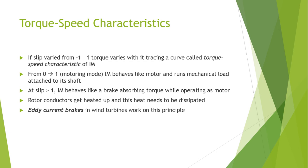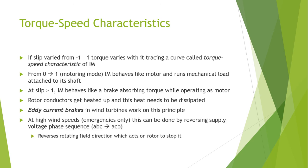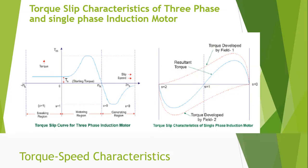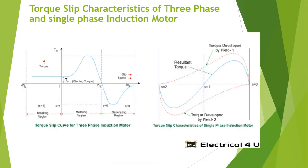Smaller machines are air-cooled and larger machines employ water cooling systems. There are also eddy current brakes; wind turbines work on these principles. At high wind speed, braking can be done by reversing the supply voltage phase sequence — for example, changing from A-B-C to A-C-B — which reverses the rotating field direction, acting on the rotor and helping to stop it.